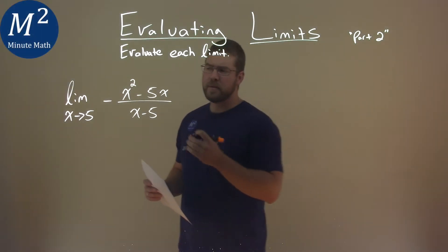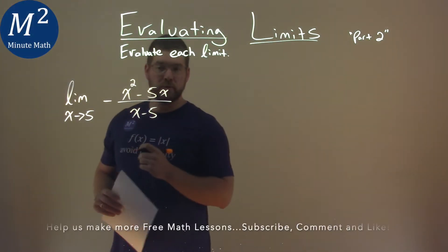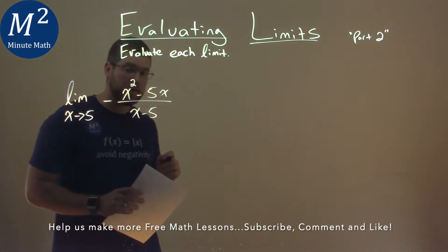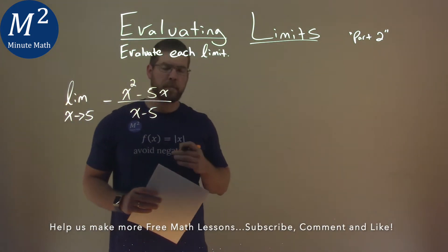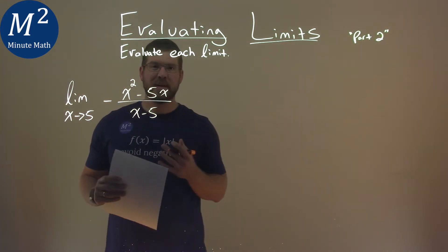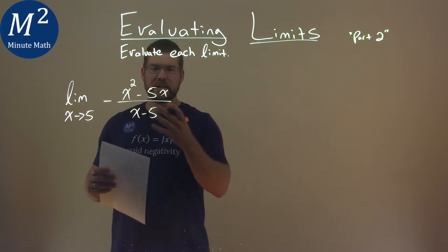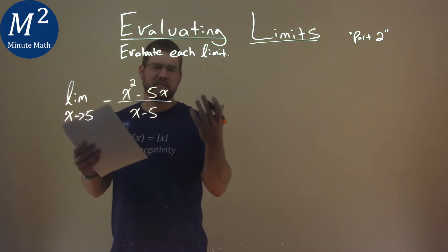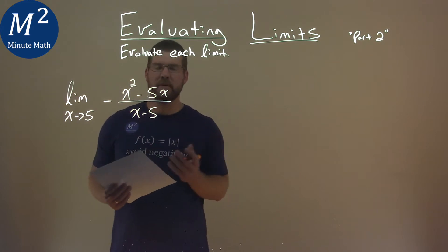We're given this limit right here. The limit as x approaches 5 of a negative in the rational function x squared minus 5x over x minus 5. Well, first thing I'm looking here with a rational function, I'm going to try to factor this and see if we can simplify it, because right now I can't plug a 5 in because the denominator equals 0 and we can't really figure out what that value is.